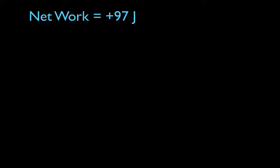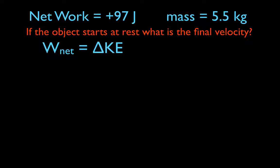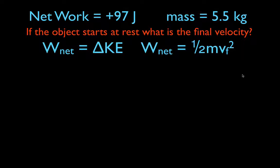Now we can use the net work to determine the change in velocity. To get the change in velocity, we're going to need the mass, and we want to know if the object starts at rest — meaning the initial velocity is zero — what will the final velocity be? To do that, we're going to use the work-energy theorem, which says that the net work is equal to the change in kinetic energy. The change in kinetic energy is final minus initial. The initial is zero, so the net work equals the final kinetic energy, and from that we can get the final velocity.